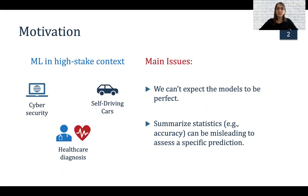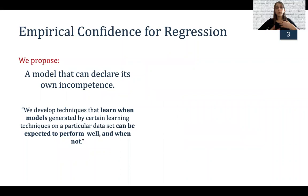For instance, not because we have a 95% accuracy does it mean that all our predictions are going to be good. There might be a subset that are very good and another subset that are very bad because they are mostly close to outliers. So what we propose here is a model that can declare its own incompetence, and we're going to focus on regression models.